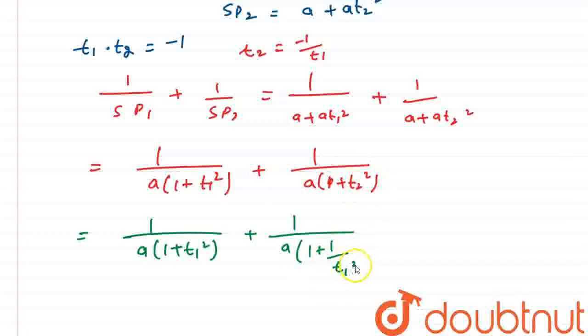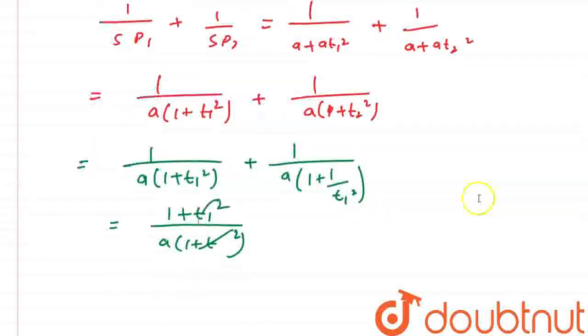It will give me 1 upon t1 square. So, after taking LCM, it will give me 1 plus t1 square upon a into 1 plus t1 square. Okay, t1 squared bracket will cancel each other and we are left with the answer 1 upon a. So, our answer is 1 upon a.